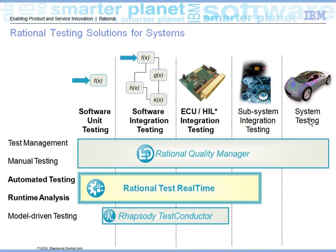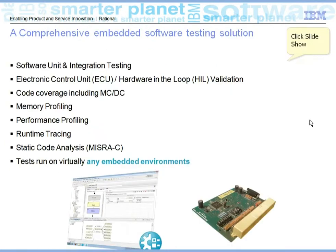You also have subsystem integration testing. All of this can be done with the integration of Rational Quality Manager, which is a quality management tool. It allows manual testing as well as automated testing management. Once software unit testing or integration testing is done, it generates code coverage, memory profile, performance profile, runtime trace, static code analysis according to MISRA C standard.